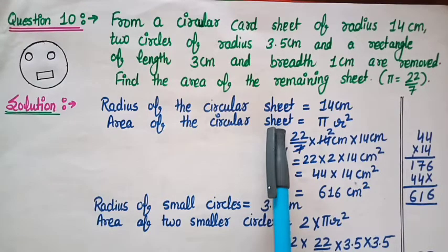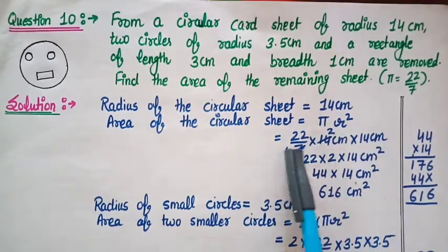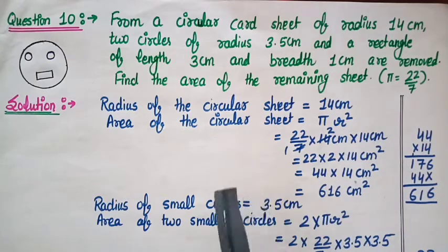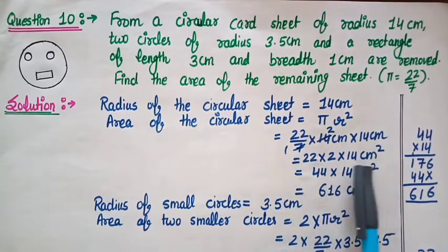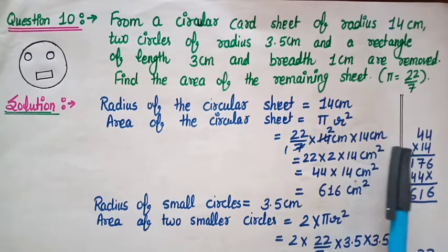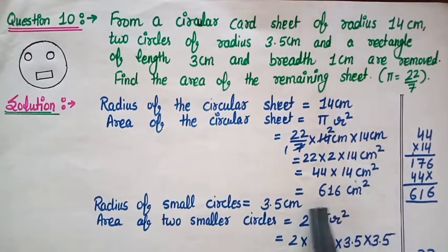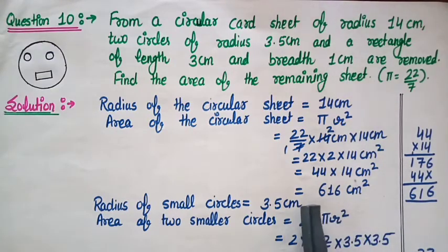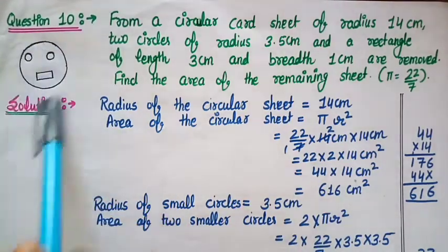Area of circular sheet = πr² = 22/7 × 14 cm × 14 cm. Now 7 cancels with 14, leaving 22 × 2 × 14 cm² = 44 × 14 cm² = 616 cm². So area of the large circular card sheet = 616 cm².